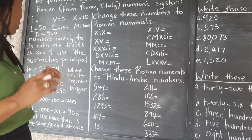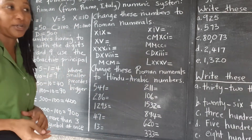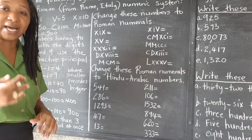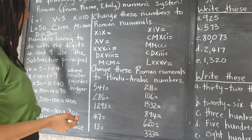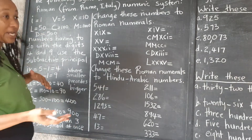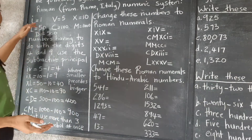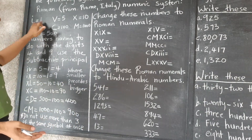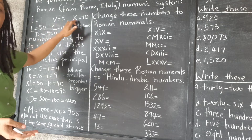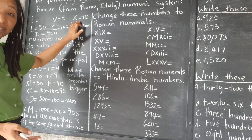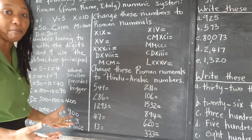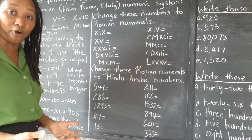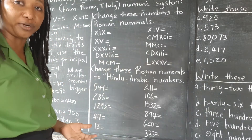For most of the numbers, we use the additive principle. All we have to do is find what each symbol means and combine them.